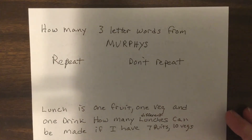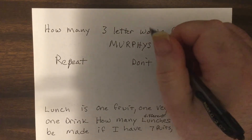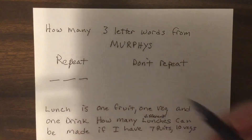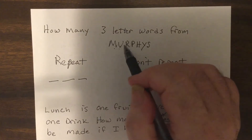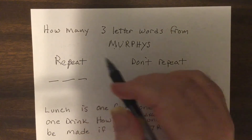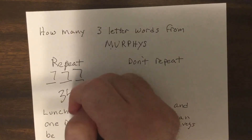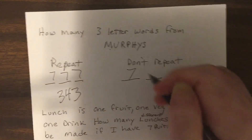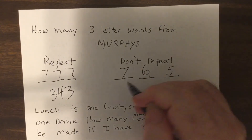Now: how many three-letter words can be made from the word MURPHY'S? It has 7 different letters. If repetition is allowed, each of the three spots has 7 choices, so it's 7×7×7 = 7 cubed = 343. If repetition is not allowed, it's 7×6×5 = 210.